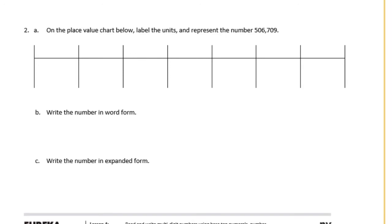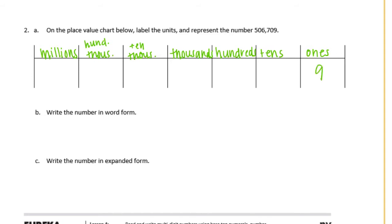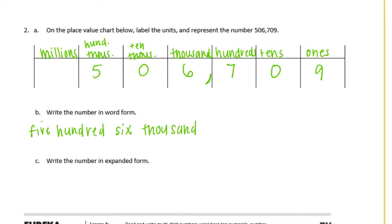We're going to do the same thing that we did on number 1 for number 2, with a different number: 506,709. So let's label our place value chart and then write the number in it. There's a 9 in the ones, 0 in the tens, 7 in the hundreds, 6 in the thousands, 0 in the ten thousands, and 5 in the hundred thousands. And how we would say this is five hundred six thousand, seven hundred nine.